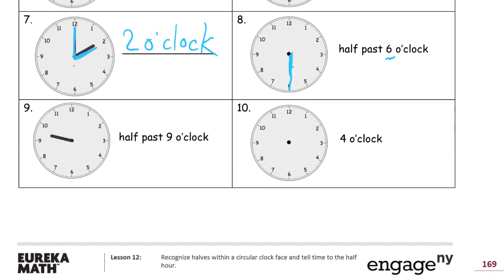Half past 9 o'clock — this must be the hour hand because it doesn't touch the numbers, so it's halfway between the 9 and the 10. Because it's half past, it's halfway on its way to 10, right in the middle between 9 and 10. Our minute hand has to be on the 6 when it's half past. We start right at the 6 and go up to the middle. The minute hand goes right to where the numbers are but won't cover them up.